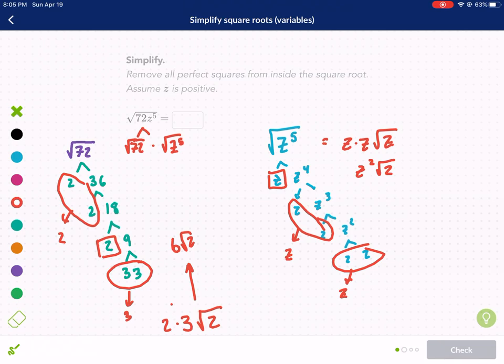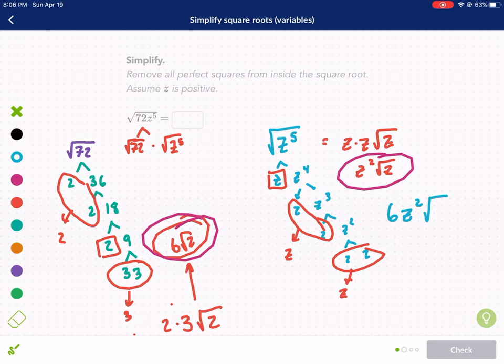Now I need to multiply both of these together. 6 square root of 2 and Z squared square root of Z. So that is, oh sorry, that's a Z, isn't it? Sorry. Z squared square root of Z. So then I have 6Z squared square root of 2Z. Just wanted to make sure I got that right. So that's going to be my answer.